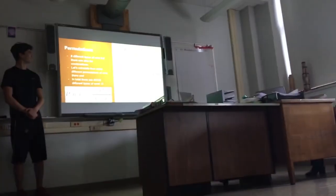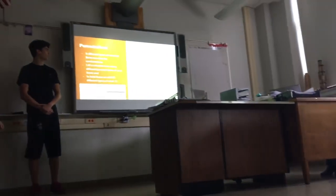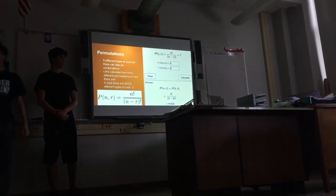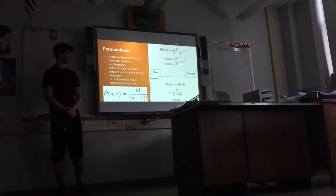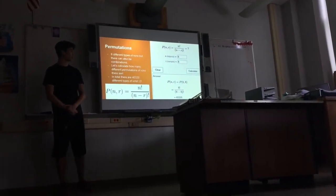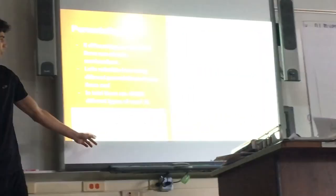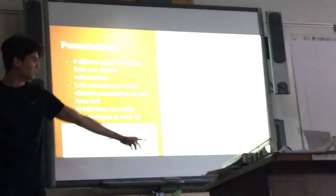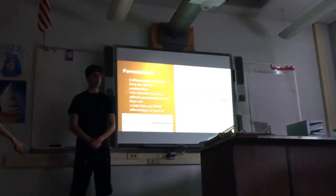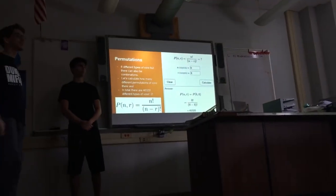We'll start with the pictures. Since there are eight different types of vor, there can also be combinations of these types of vor. Let's calculate how many different permutations of vor there can be. If you do all of these equations, the end result is 40,320 different types of vor.